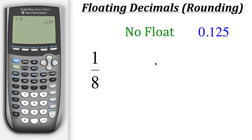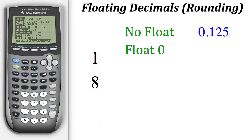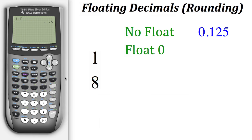Let's see what happens when we make some changes to our float settings. Let's set float to zero: we'll go to mode, go down to float, scroll over to zero, and then hit enter. Now let's quit out of this menu and do the same operation again — one divided by eight.